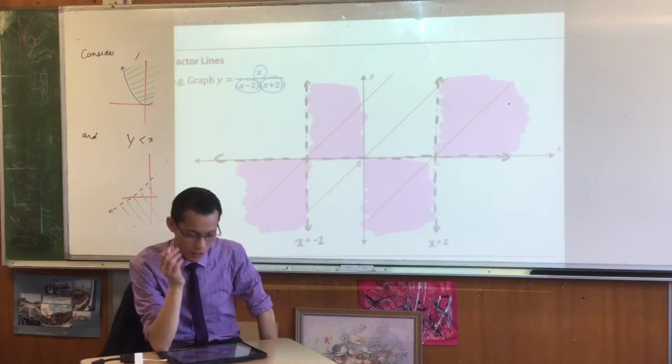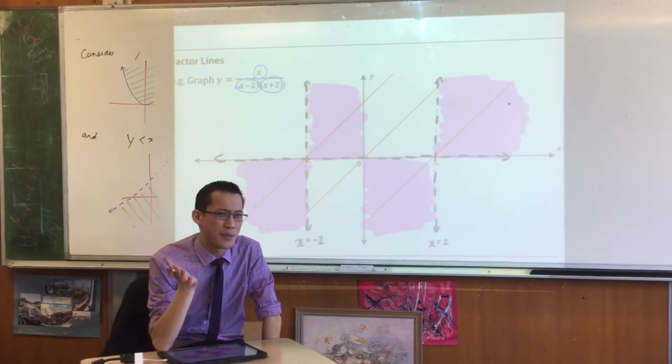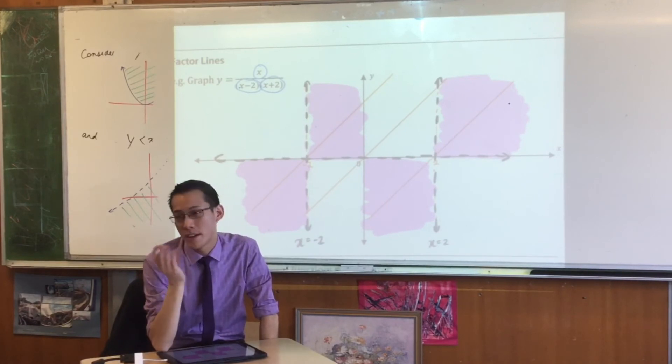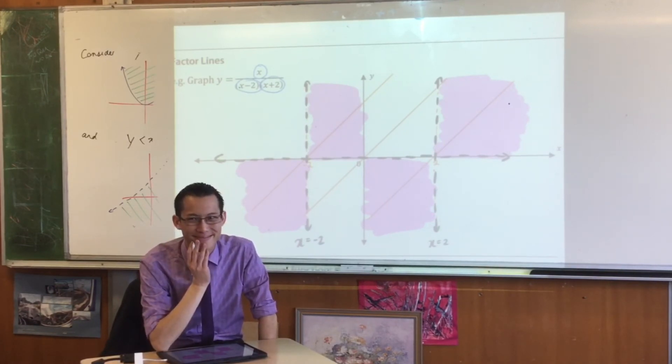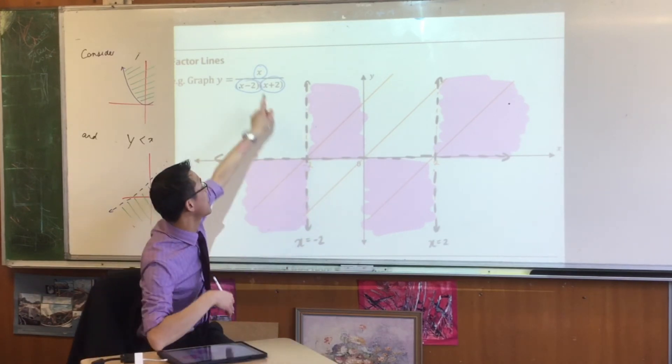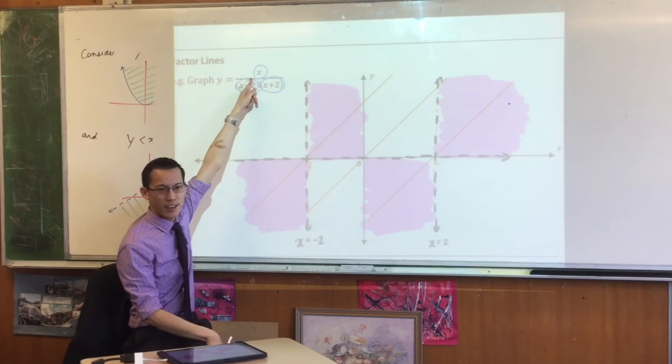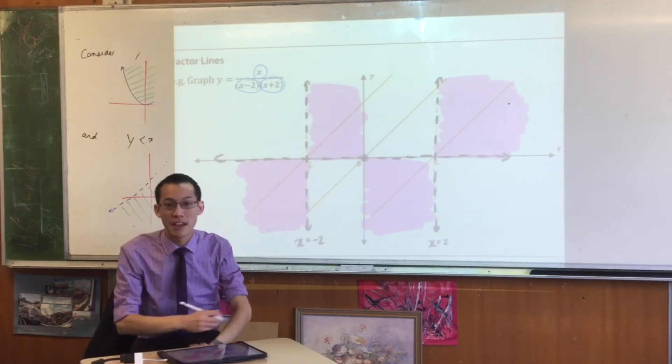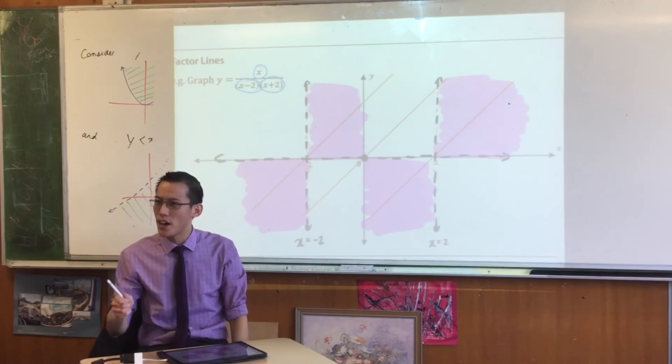Last little thing I want to do: on any graph the intercepts are usually pretty important. When you put in x equals zero, because x is in the numerator, you just get y equals zero. So it passes through the origin right there in the middle, which is weird at first because you're like, wait, that's an asymptote.